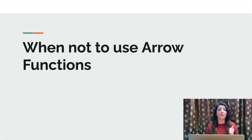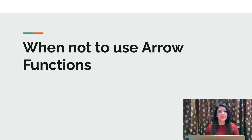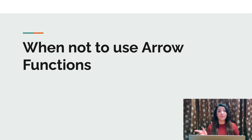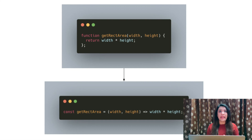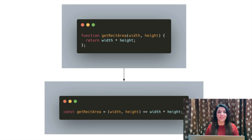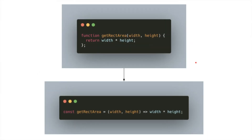Converting regular functions to arrow functions does make your code look beautiful and concise. But the differences between them is not just limited to the syntax. Blindly converting every regular function to an arrow function can create bugs in your code. So let's discuss the cases where you should not use arrow functions.